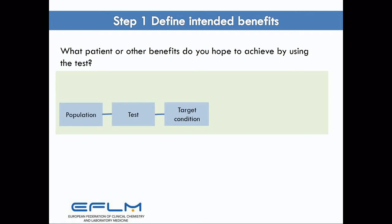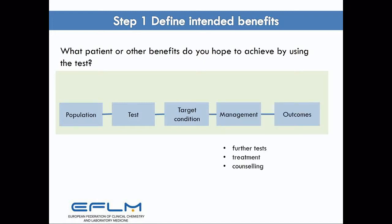The first step is defining the intended benefits of the test. What patient or other benefits do you hope to achieve by using the test? That could be downstream: I'm going to use the test to detect the disease or undertake further tests, then treat the patients, or maybe use that information to counsel patients — that's my pathway to improving outcomes. Or it might be that we've already got a pathway with an existing test and management, and I'm going to use my test because it offers a better process: it's safer, more convenient, or perhaps less costly.